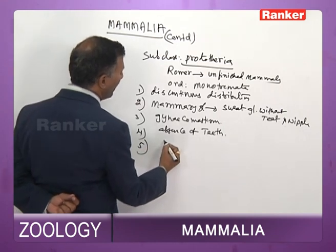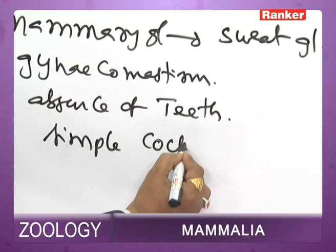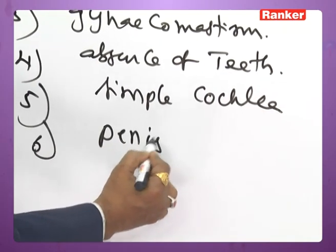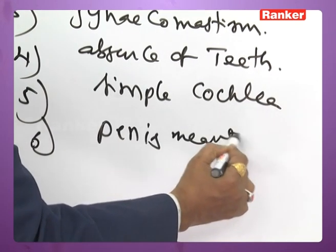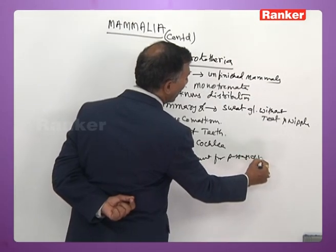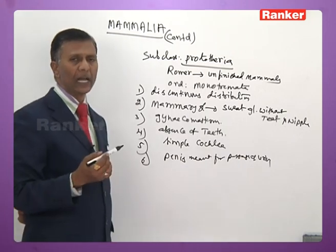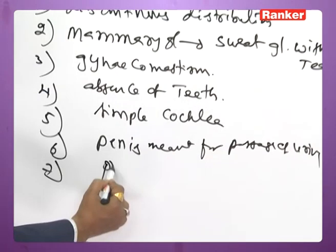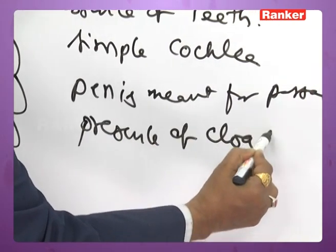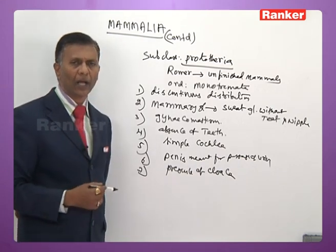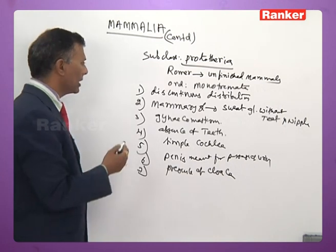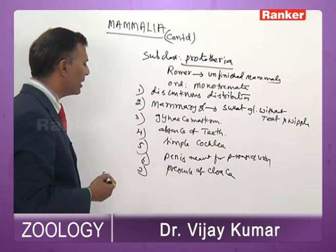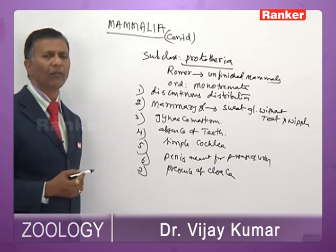(5) Simple, less-coiled cochlea is present. (6) The penis is meant only for passage of urine — it does not help in insemination. (7) Presence of cloaca. These — discontinuous distribution, mammary glands as modified sweat glands, gynecomastism, absence of teeth, simple cochlea, penis for urine passage, and presence of cloaca — are all unique characteristics of Prototheria.